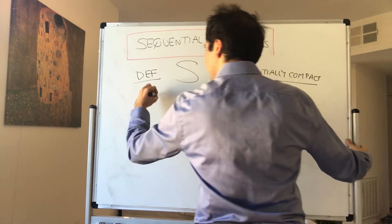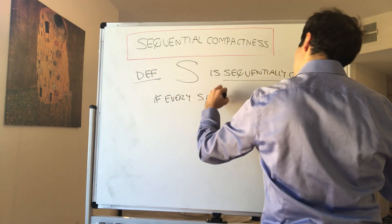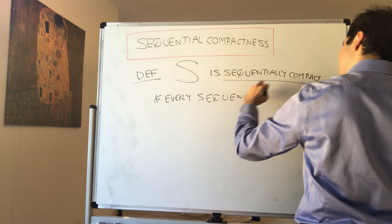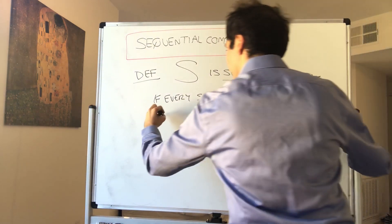If every sequence Sn in S has a convergent subsequence, subsequence Snk.